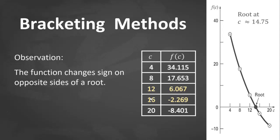In general, if a function f of x is real and continuous in the interval xl to xu, and f at xl and f at xu have opposite signs, that is, f at xl times f at xu is less than 0, then there is at least one real root between xl and xu.